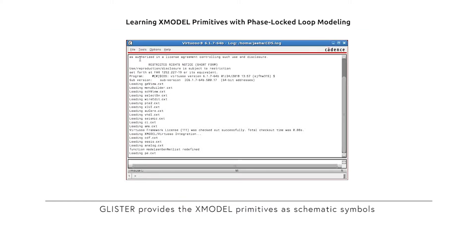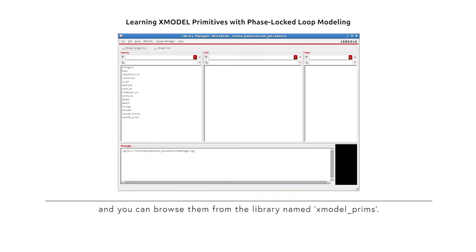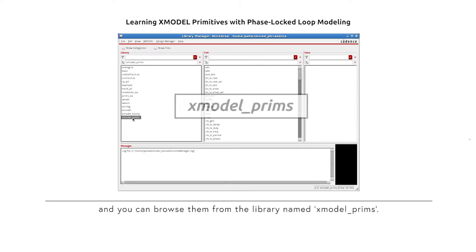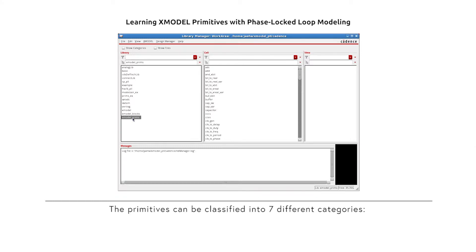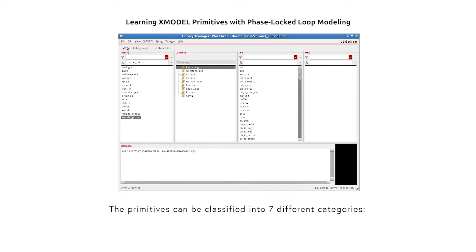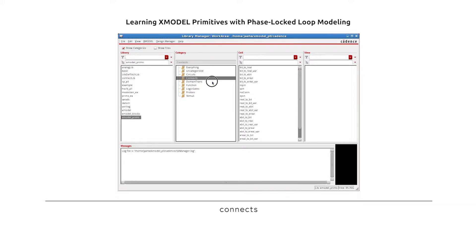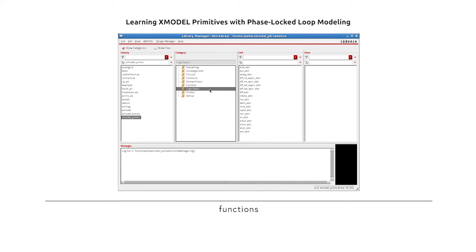Glister provides the X-Model primitives as schematic symbols, and you can browse them from the library named xmodel-prims. The primitives can be classified into seven different categories: circuits, connects, domain translations, function, logic gates, probes, and stimuli.